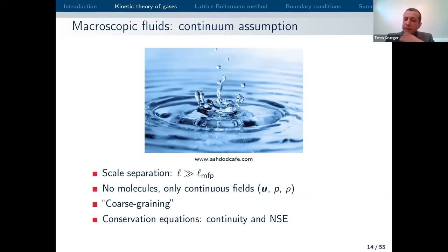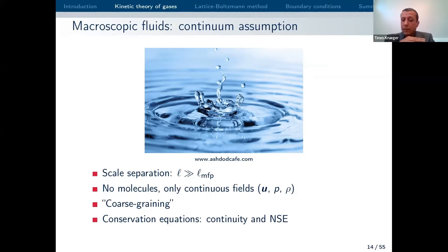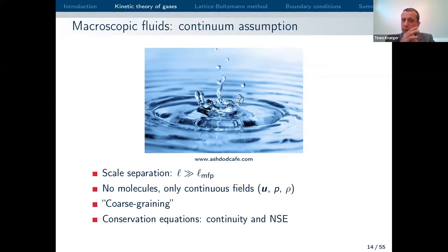If we get back to the macroscopic picture, engineers who are interested in practical problems are often just interested in the continuum picture. Whenever you take the Navier-Stokes equation, you already assume that the fluid of interest is a continuum material. This is a good assumption because the length scale of interest is typically much much larger than the mean free path of the molecules. If your length scale of interest becomes similar to the mean free path, then the continuum assumption becomes a very poor assumption and we have to do something different.